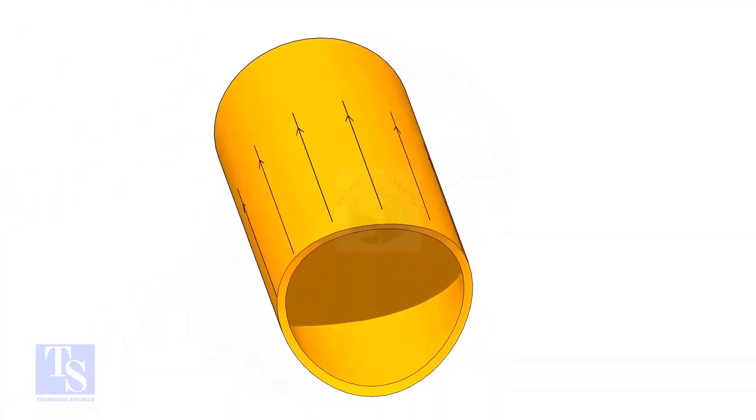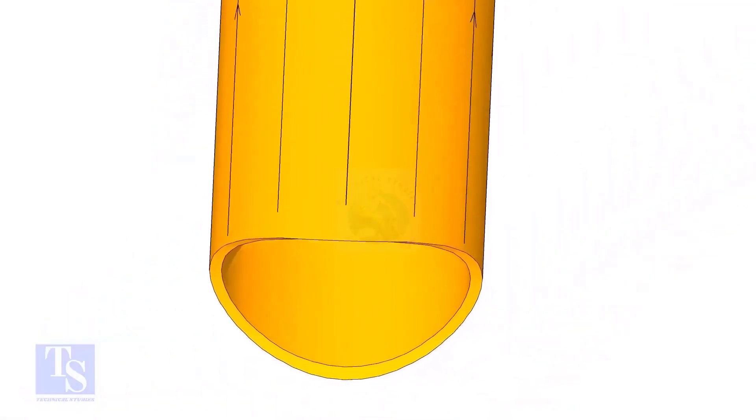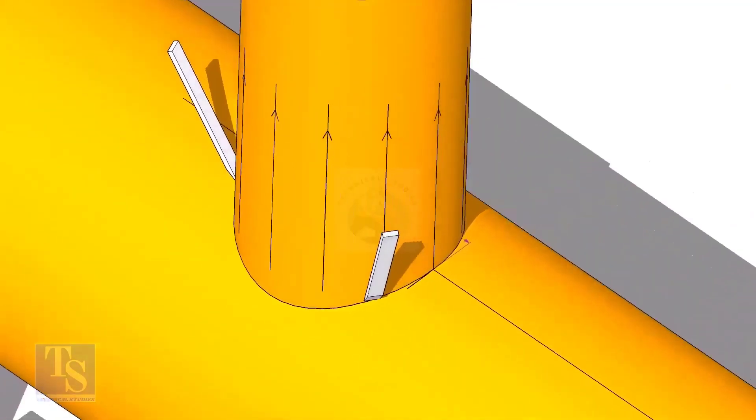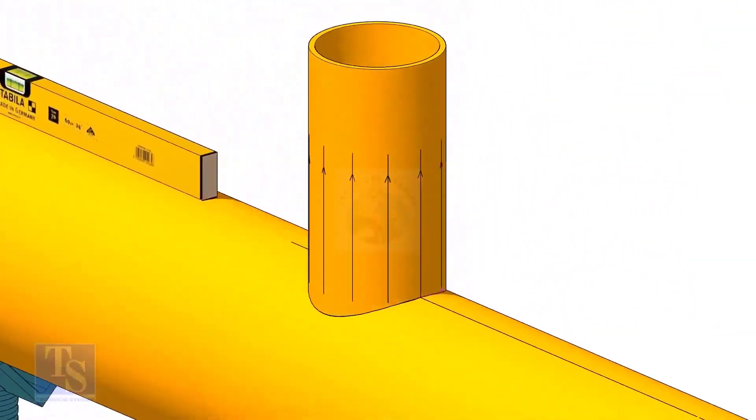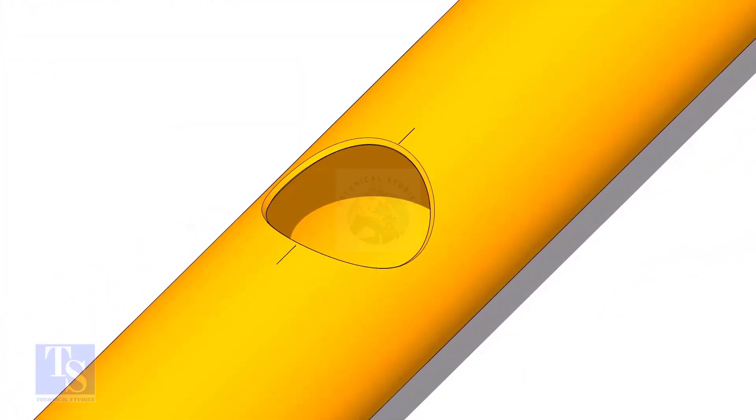After cutting and grinding the notch on the branch pipe, put it on the header. Make sure it is exactly in its position and mark the opening on the header as shown. Cut the opening on the header. Prepare the bevel.